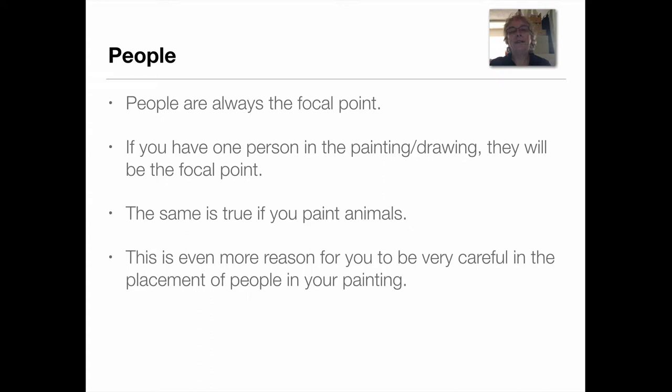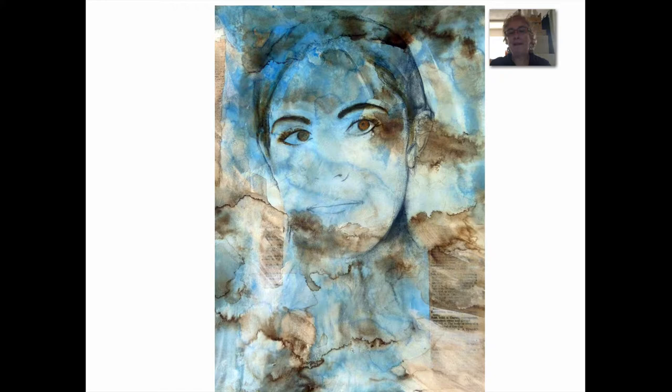Here are some examples. You have a face here in an assortment of different blended areas — what do you see first? The eyes. That's automatic in most paintings. Same thing here: there's a massive amount of lines, but what do you see the most? The eyes. People are automatic focal points.